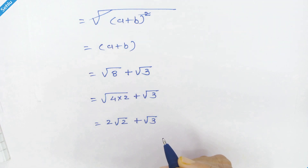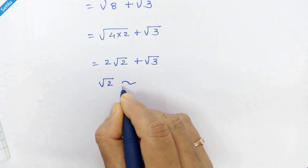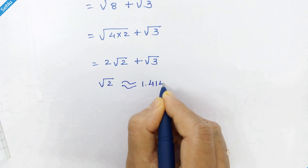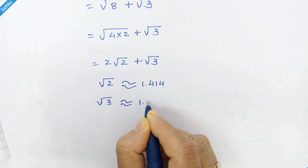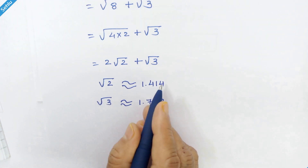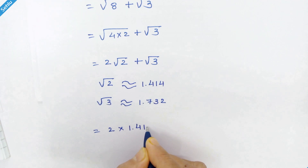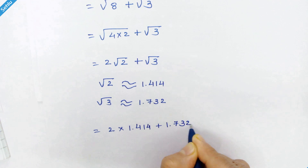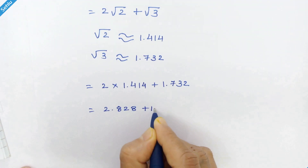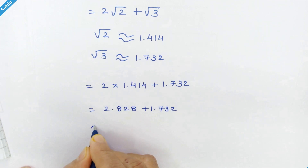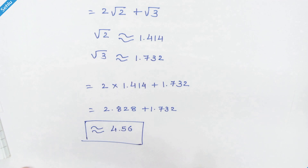But let's go a little further. Square root of 2 is approximately equal to 1.414 and square root of 3 is approximately equal to 1.732. Putting these values in, we have 2 times 1.414 plus 1.732, which gives 2.828 plus 1.732, so we have 4.56 as the decimal answer.